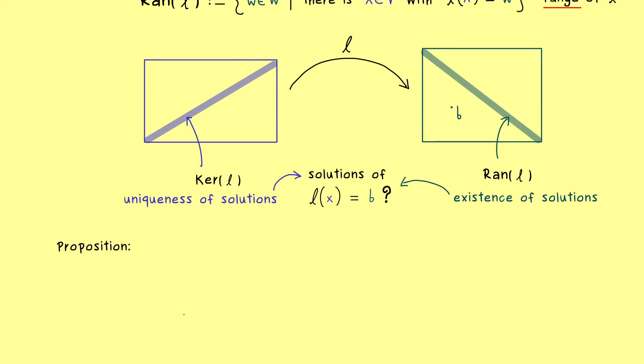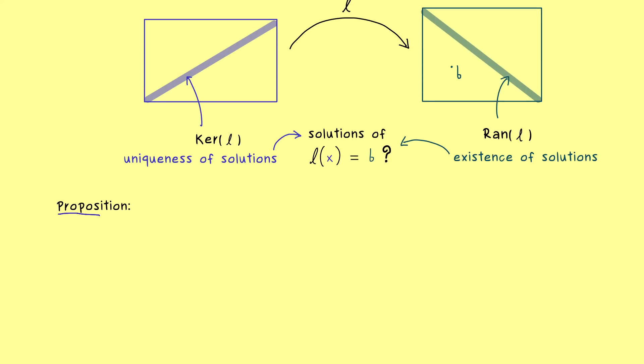Therefore, I would say let's put this into a quick proposition as well. Hence, the assumptions are all the same as before. We take a linear map, two vector spaces and a right hand side b. Now we can call the solution set simply S and it contains all the elements in V that solve our linear equation.